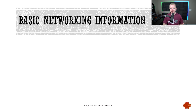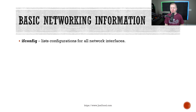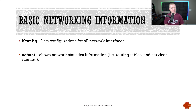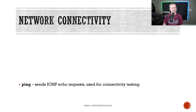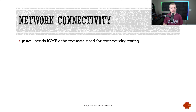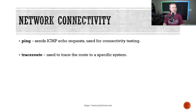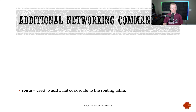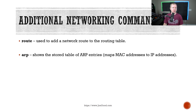For basic networking: ifconfig lists all network interfaces, similar to ipconfig on Windows. netstat shows network statistics, routing tables, and running services. ping sends ICMP packets to test connectivity — standard across operating systems. traceroute identifies the path data takes to reach a destination. route adds entries to the routing table. arp shows stored ARP entries or MAC addresses in the ARP table.